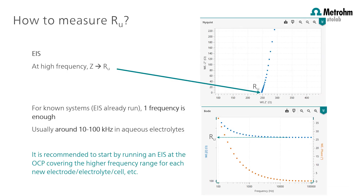How do you measure the value of the uncompensated resistance? There are different ways to do this. The easiest way is to use the electrochemical impedance spectroscopy method, because in the high frequency range, usually the total resistance of your system will also be the uncompensated resistance. When you run EIS, you can see in the Bode plot the total impedance, which is the same value as the real component of the impedance in the Nyquist plot close to zero. Start with the OCP as a DC voltage because this is the least invasive parameter for the EIS experiment.